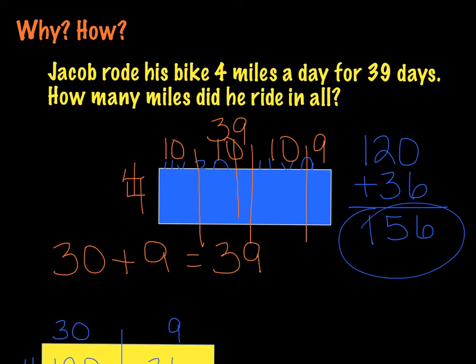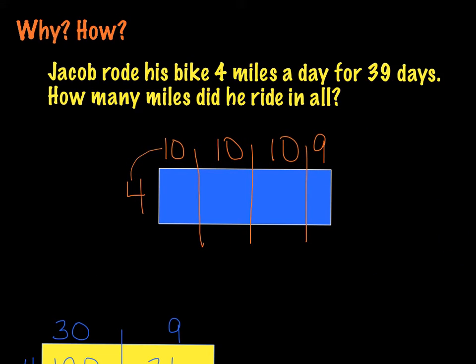So I'm still going to do the problem the same way. I'm going to multiply this 4 times this 10, which is going to give me 40, and then I'm going to multiply times the second 10, which will give me 40 again, and the third 10, which gives me 40 again, and then our 4 times 9, which is our 36. We add 40 plus 40 plus 40, which is 120, and we take our 36, and we add those together just like we did before, and we come up with 156.